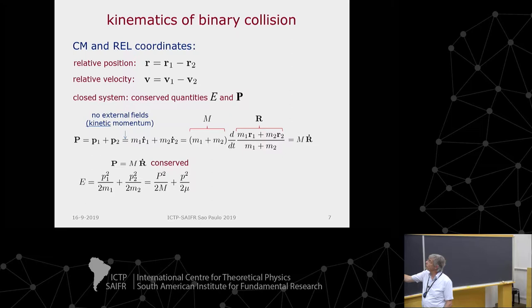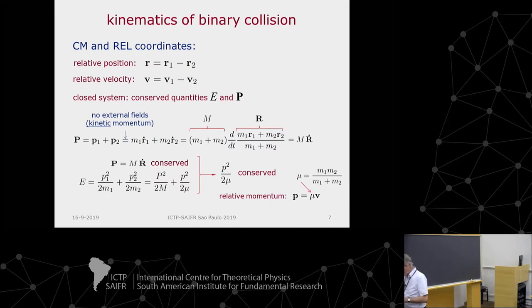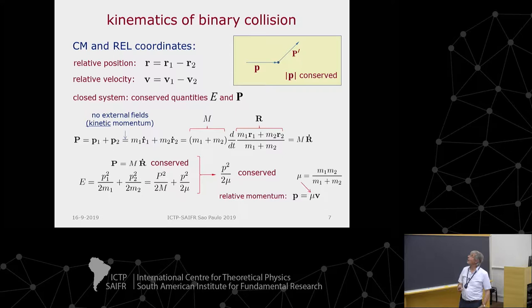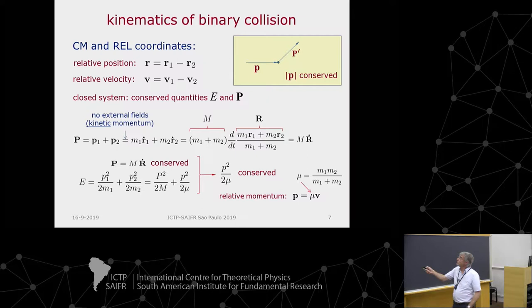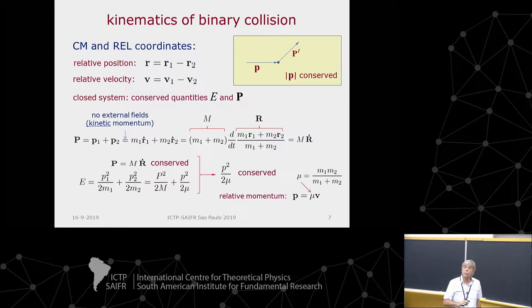We can reduce the phase space by a factor of two using conservation laws, concentrating only on the relative motion. Because p² is conserved, the modulus of the momentum is conserved — the particles scatter to a different angle, but p equals p-prime. In analyzing the collisional motion, we will not look at the center-of-mass motion, but concentrate on the relative motion of the particle.